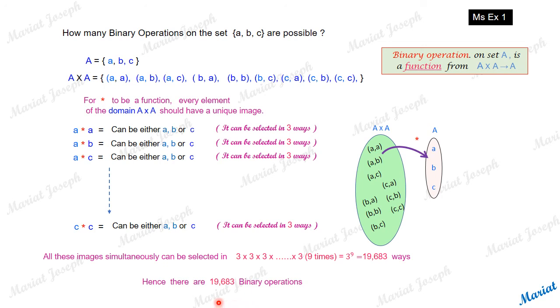So there will be 19,683 binary operations possible on a set with three elements.